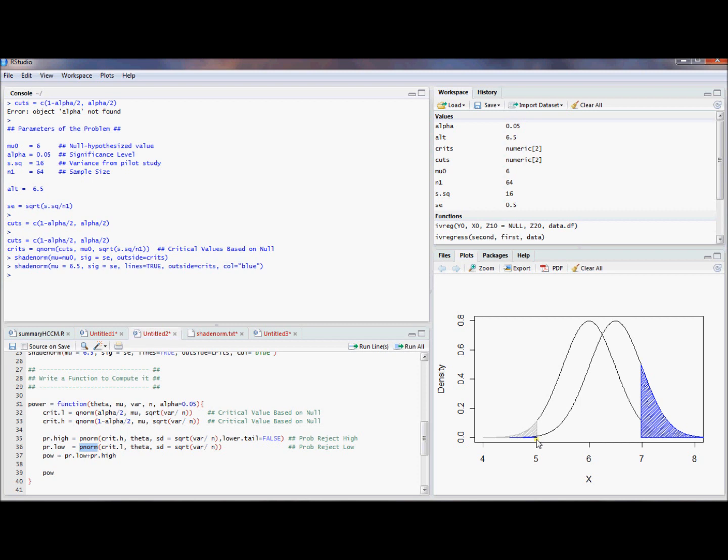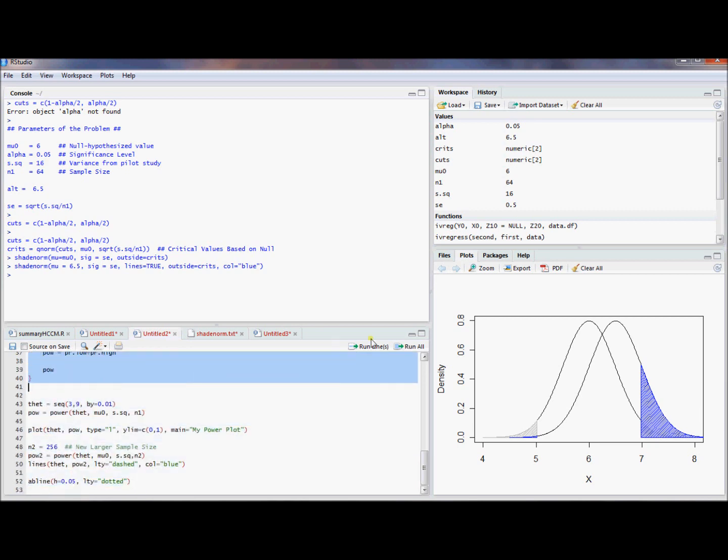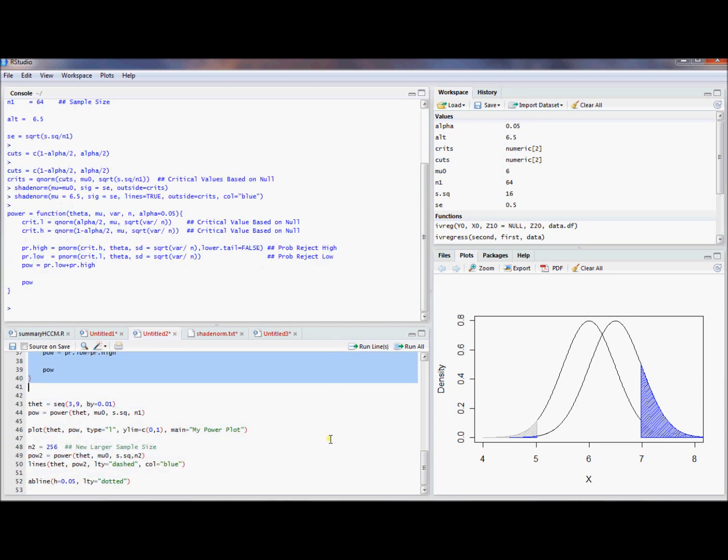And this prLow, using the pNorm command as well, corresponds to this little sliver here. It might be a big sliver if we assume a theta value of 5.5, but for something like 6.5, it's a little sliver. So we compute both of these rejection region probabilities. And then we add them up, and we call that the power. So that's simple, straightforward enough. So we can just go ahead and run that code there, and that gives us a function called power.